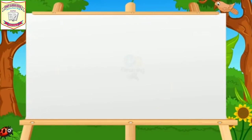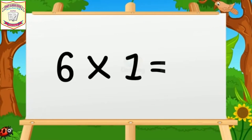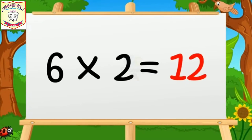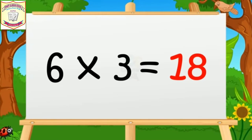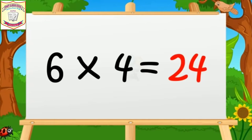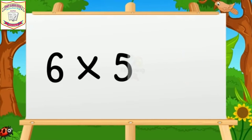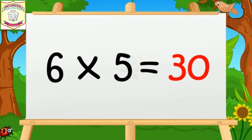Table of Six. Six ones are six. Six twos are twelve. Six threes are eighteen.